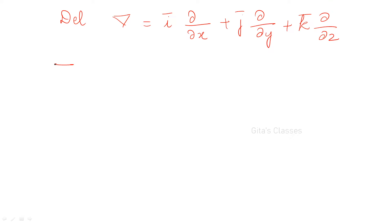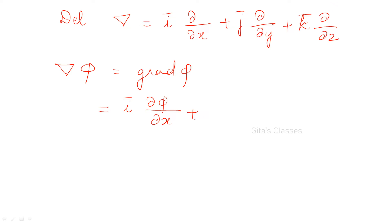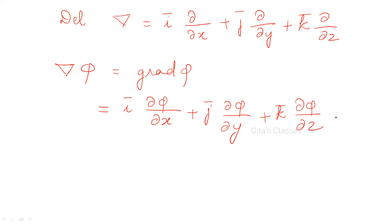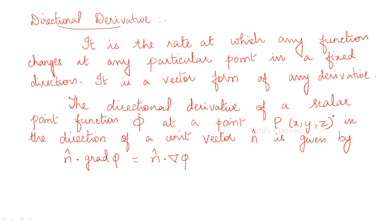If this del is operated on a scalar point function phi, it is known as grad phi or gradient of phi. That is i into ∂phi/∂x plus j into ∂phi/∂y plus k into ∂phi/∂z. This is what is called gradient of phi. We have studied this and done some problems in the previous class.